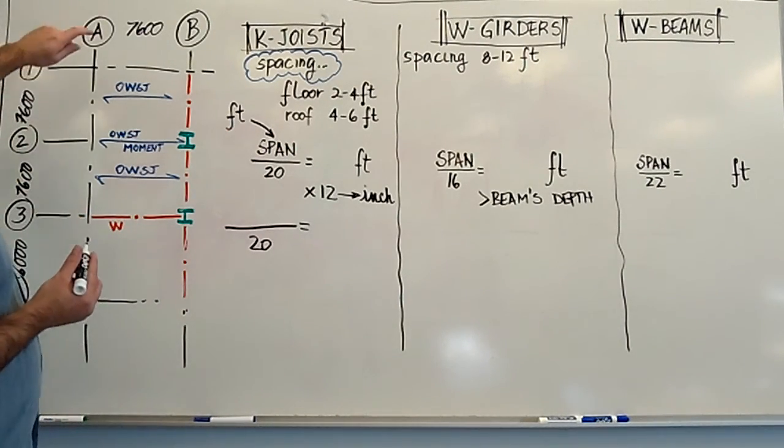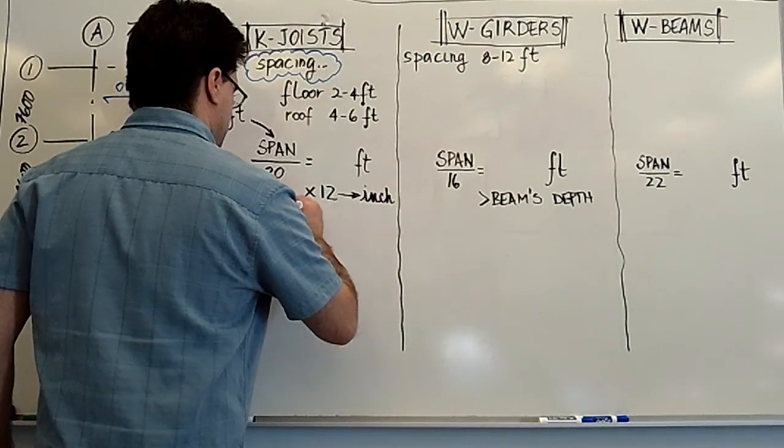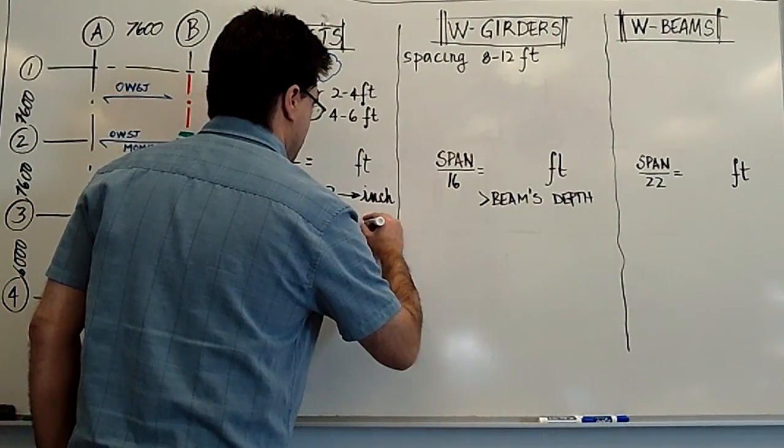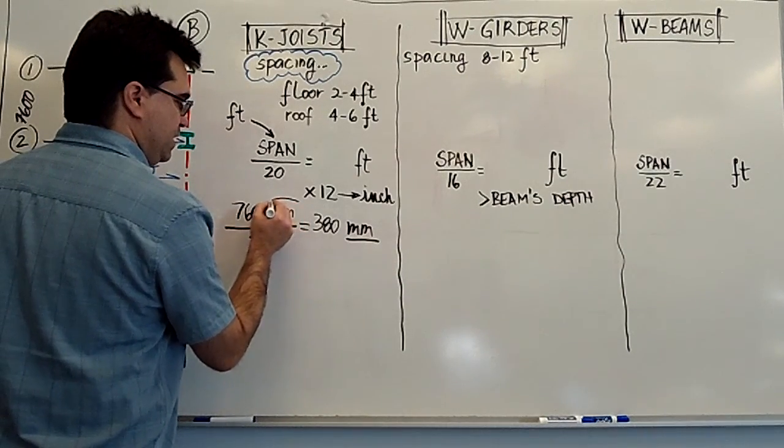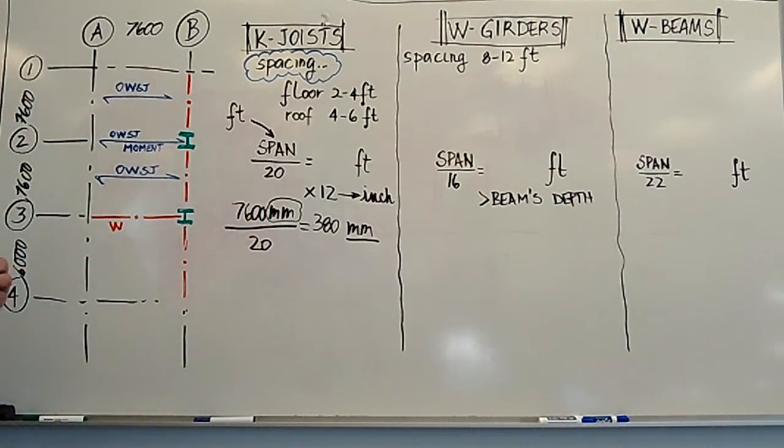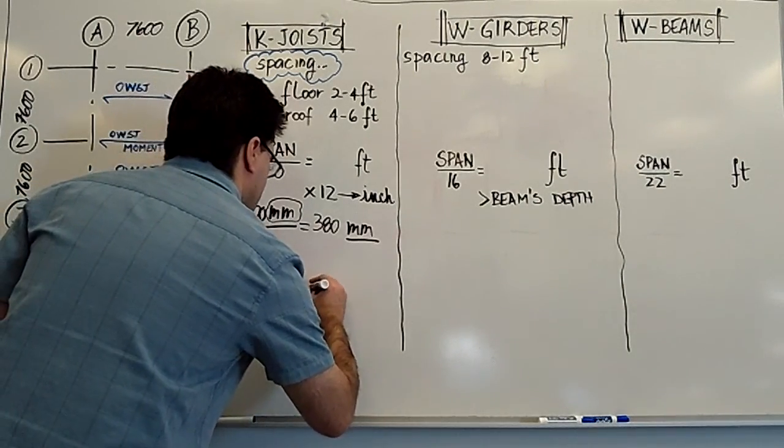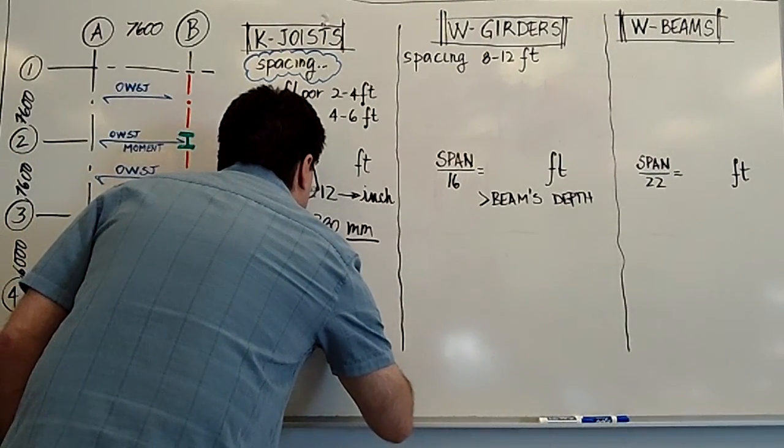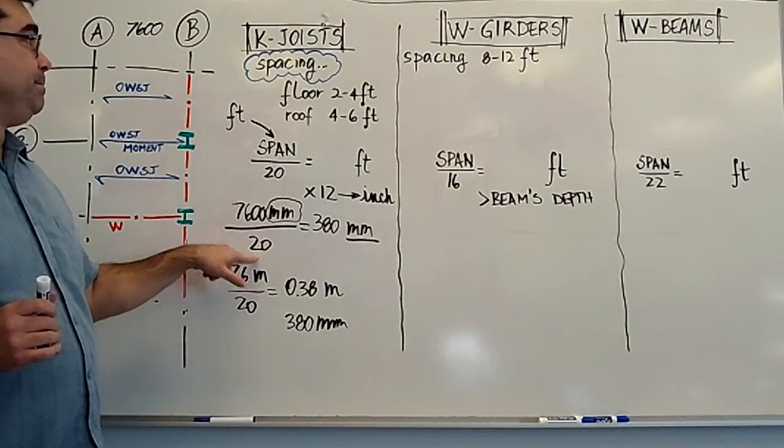Anyways, I'm talking too much. Let's do this. Let's do this in millimeters. If we do 7600, the span in millimeters, and divide by 20, what we get is 380 millimeters. That is the vertical depth. So again, the units of the depth are the same units that you put in here. So what that means is that say if I did it in meters, 7.6 meters divided by 20, I get 0.38 meters. Which means that if you want to convert this from meters to millimeters, you'd have to do that in order to get 380 millimeters. That simple. Just divide by 20 for your K-joists.